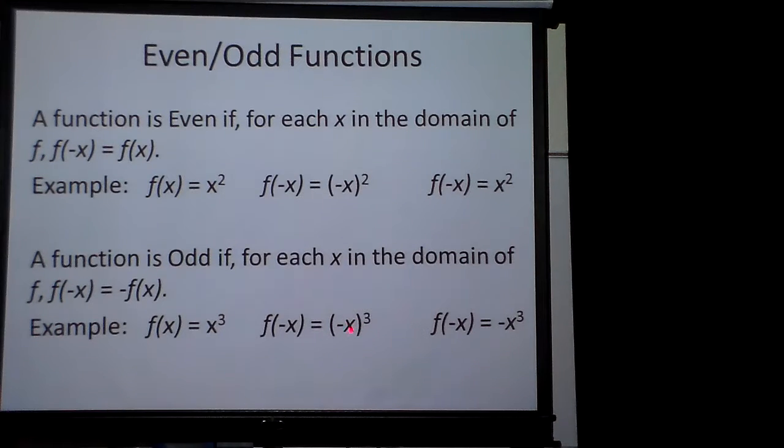then I'm going to take negative x cubed. Well, what's that? That's negative x times negative x times negative x, which gives me a negative answer. So therefore, if I took a positive function, put a negative x value in, and I get the same number but it's now negative, it is considered to be odd.